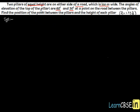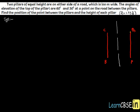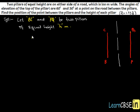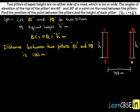Let us draw a simple figure to represent the above question. Here BC and PQ are two pillars of equal height H meters. The height of each pillar is BC equal to PQ equal to H meters. The width of the road is 100 meters, so the distance between pillar BC and pillar PQ is 100 meters — that is, BP equal to CQ equal to 100 meters.